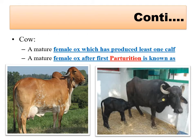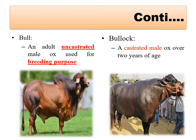A cow is a mature female bovine which has produced at least one calf. Then comes bull and bullock. A bull means an adult uncastrated male bovine used for breeding purposes.